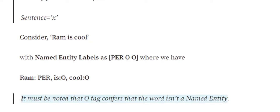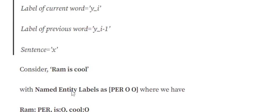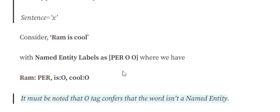Let's take an example to understand how CRFs work — how feature functions are calculated over a given sentence and how a CRF calculates the probability of a given tag sequence. Consider the sentence 'Ram is cool'. The named entity labels for this sentence are PER, O, and O. PER refers to a person entity — Ram is a person's name — while 'is' and 'cool' get the tag O.